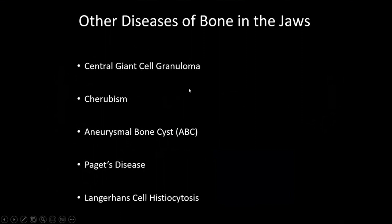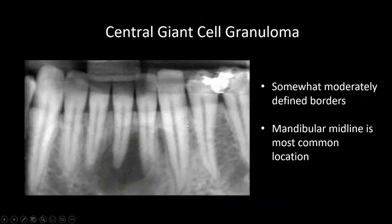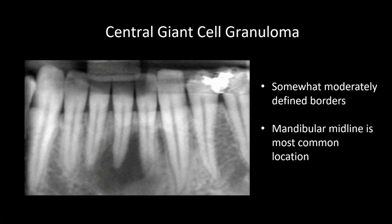Other diseases of bone include central giant cell granuloma, cherubism, aneurysmal bone cyst, Paget's disease, and Langerhans cell disease. Central giant cell granuloma tends to occur in a younger population with multinucleated giant cells. Key features include a predilection for the anterior mandible and, notably, it is one of the few lesions that will cross the midline. It has well-defined, delicate margins with thinning and expansion of otherwise intact cortical borders.